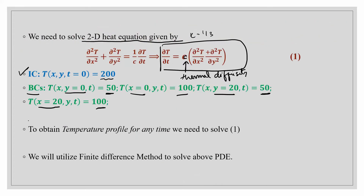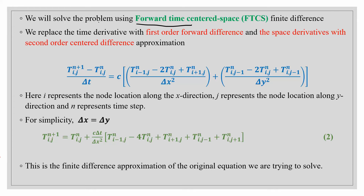We need to obtain the temperature profile at any time. For this, we will use the finite difference method to solve this partial differential equation. We will use the Forward Time Centered Space (FTCS) finite difference scheme. There are other schemes like backward time centered space, but in this tutorial we will focus only on FTCS.